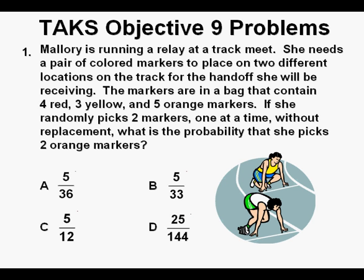She needs a pair of colored markers to place on two different locations on the track for the handoff she will be receiving. The markers are in a bag that contain four red, three yellow, and five orange markers. If she randomly picks two markers, one at a time, without replacement, what is the probability that she picks two orange markers?